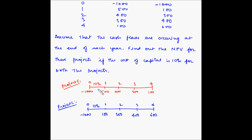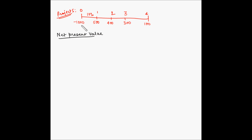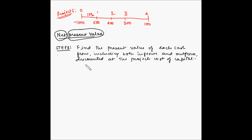Let us first consider Project S. To find the net present value, we first have to find the present value of all the cash flows for the project, including both outflows and inflows, and then find the net value of all those present values. Since we have already assigned negative signs to outflows and positive signs to inflows, we simply add all the discounted cash flows to get the NPV. The first step is to find the present value of each cash flow discounted at the project's cost of capital.